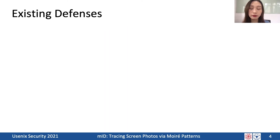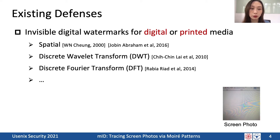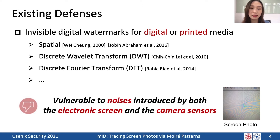To avoid cyber theft, companies usually conduct digital forensics with invisible digital watermarks. However, existing watermarks typically work for digital or printed documents, and may not suffice for screen photos, since noises introduced by both electronic screens and camera sensors may make the watermark no longer recognizable. Therefore, digital forensics for screen photos is in urgent need.